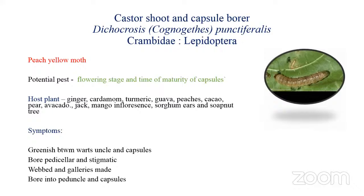The first pest is the castor shoot and capsule borer. The scientific name is Dicrocrocis punctiferalis, belonging to family Crambidae and order Lepidoptera. This pest is also known as the peach yellow moth and is a potential pest of castor, occurring during the flowering stage as well as during the time of maturity of capsules.